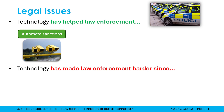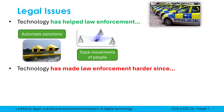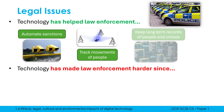Things like speed cameras can automate punishment — automate sanctions for people speeding — whereas a police officer would have to stand there with a camera previously, now it can be done automatically. Mobile phones are an amazing resource for police officers because we can track movements of people, both criminals but also missing persons, because they're connecting to cell towers we can essentially know roughly where each individual person is located, which is really important for investigations.